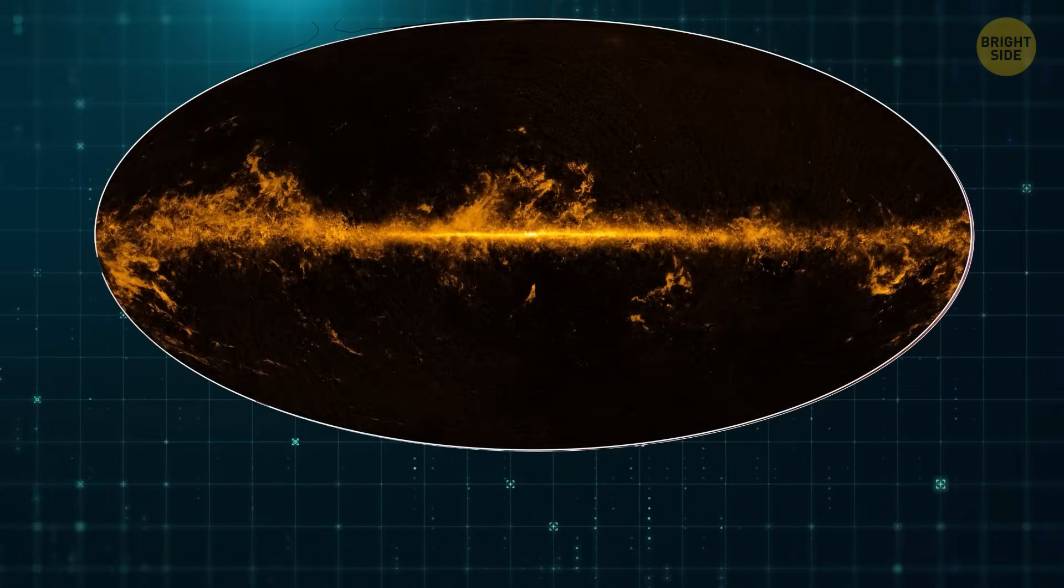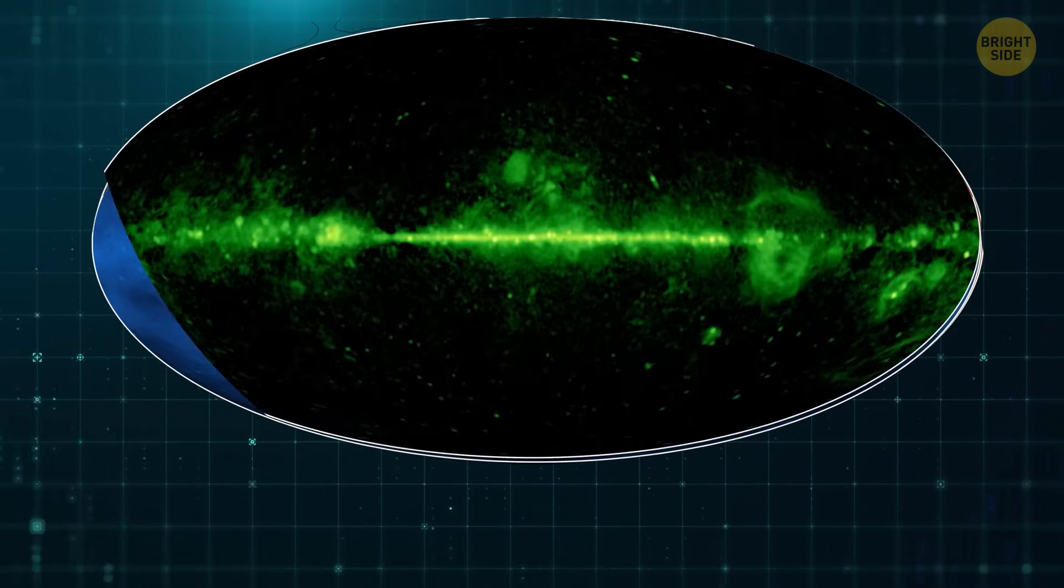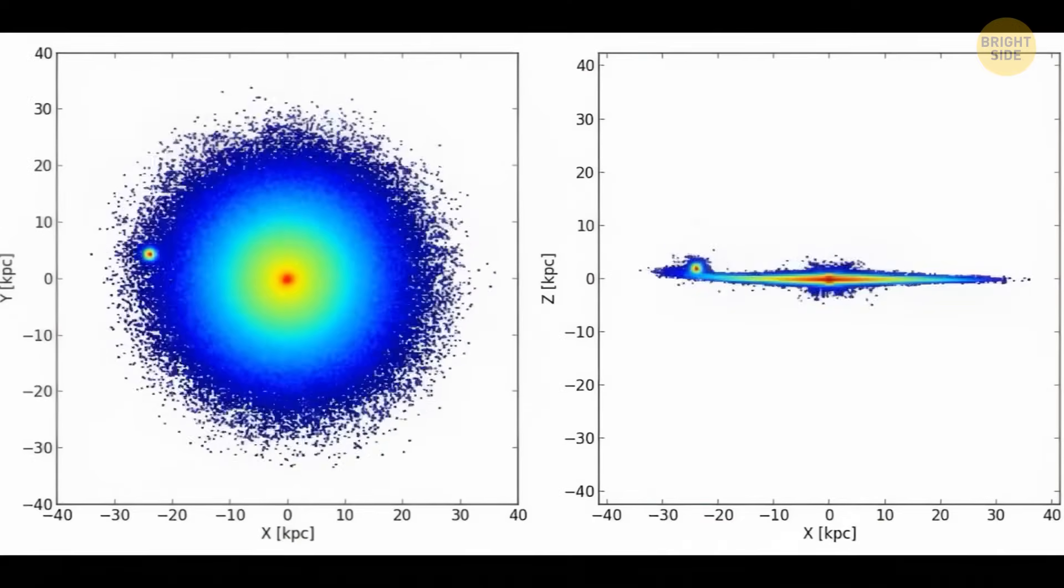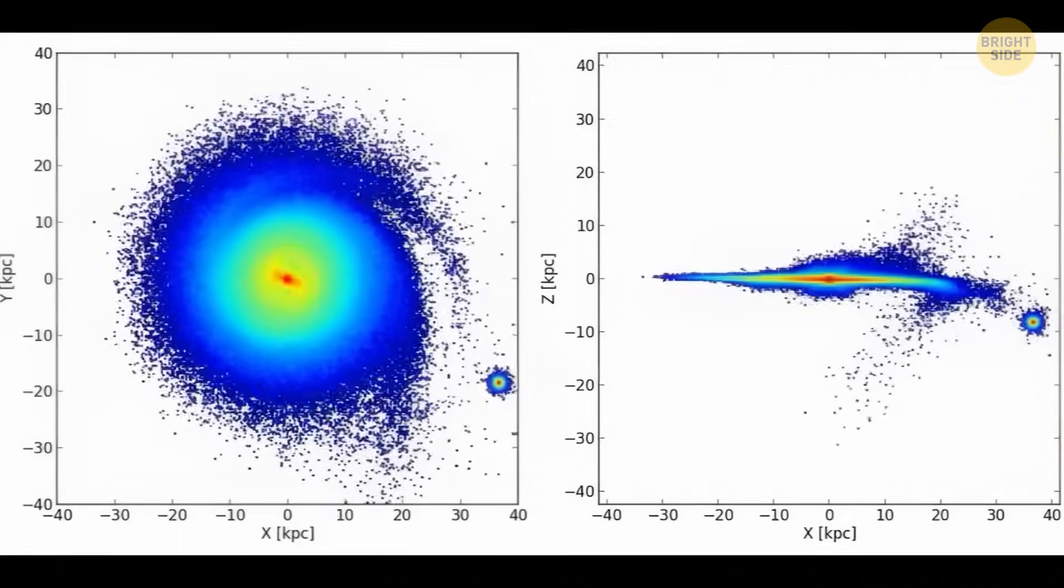Recent discoveries have revealed that the Milky Way is not a flat disk as previously thought. No, it has a warped structure. And the craziest thing? Dark matter might be the cause of this deformation.